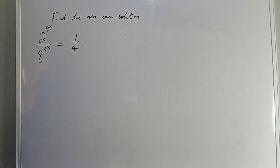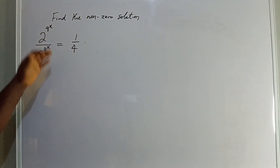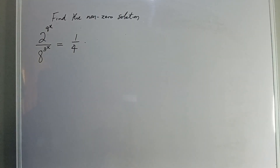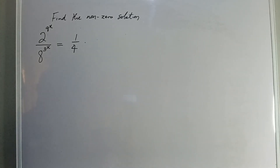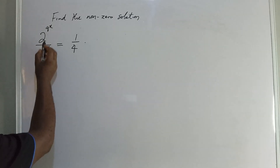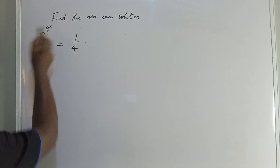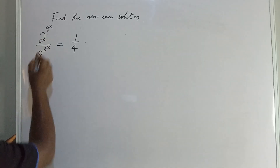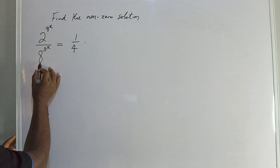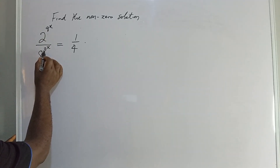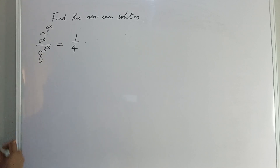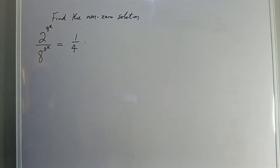So here we have, we are asked to find the non-zero solution to this particular question. The question is: 2 to the power of 9 to the power of x, divided by 8 to the power of 3 then to the power of x, equal to 1 over 4. What would be the value of x?